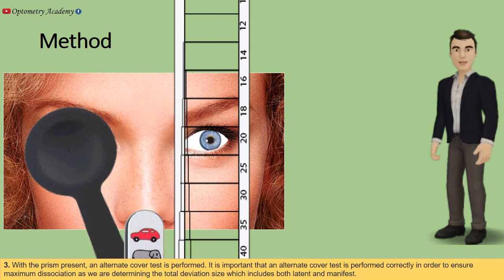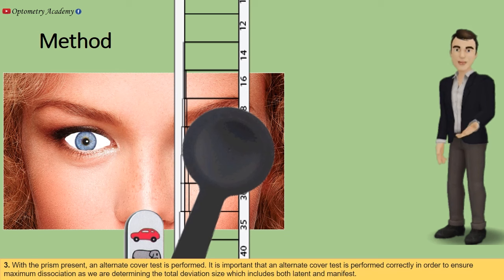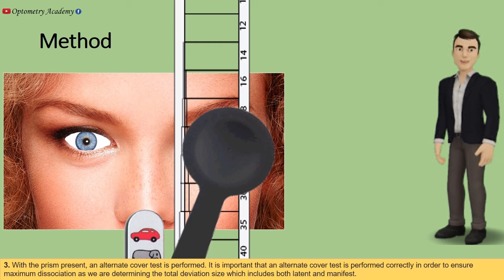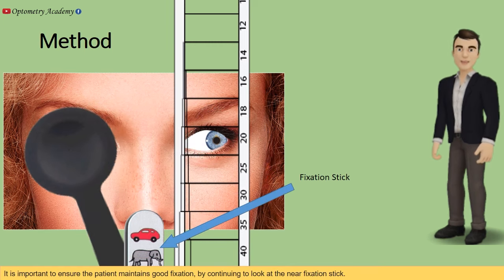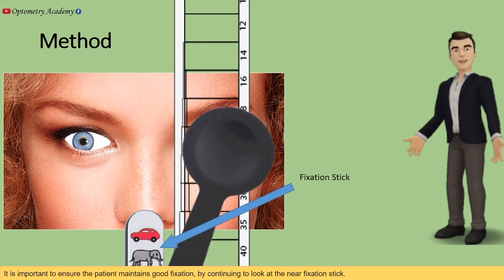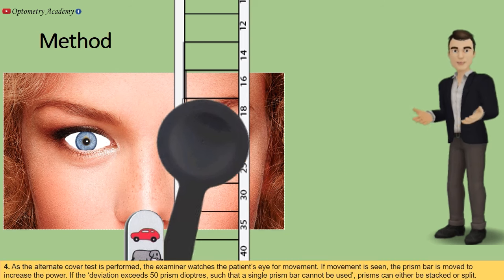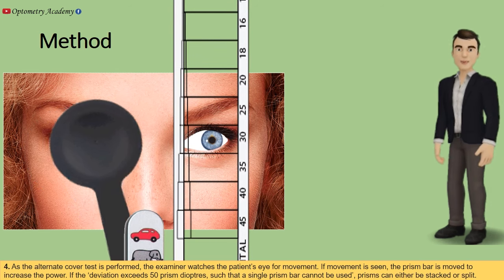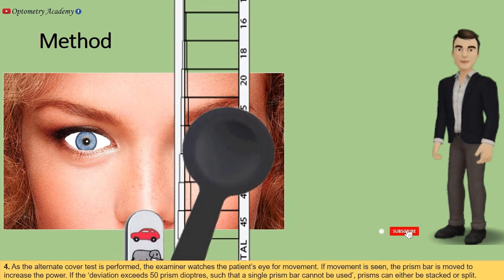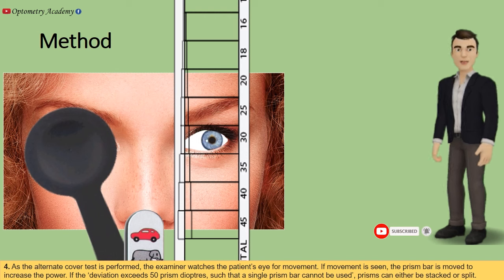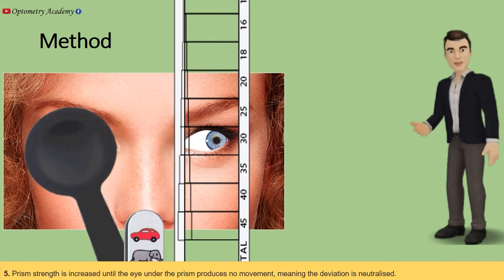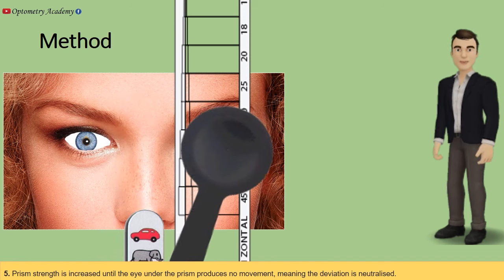It is important that the alternate cover test is performed correctly to ensure maximum dissociation, as we are determining the total deviation size which includes both latent and manifest components. It is important to ensure the patient maintains good fixation by continuing to look at the near fixation stick. As the alternate cover test is performed, the examiner watches the patient's eye for movement. If movement is seen, the prism bar is moved to increase the power. If the deviation exceeds 50 prism diopters such that a single prism bar cannot be used, prisms can either be stacked. Prism strength is increased until the eye under the prism produces no movement, meaning the deviation is neutralized.